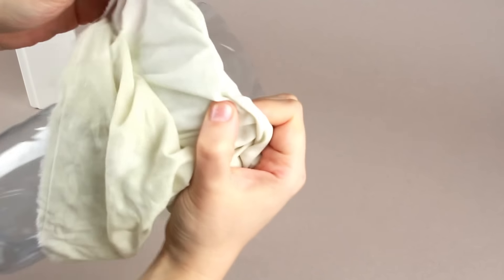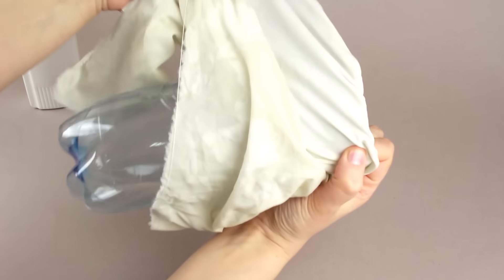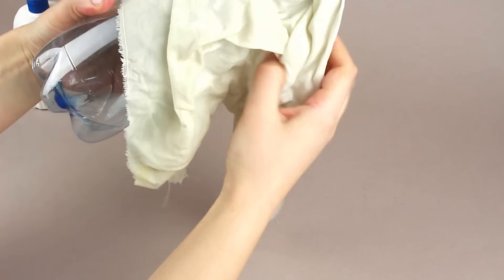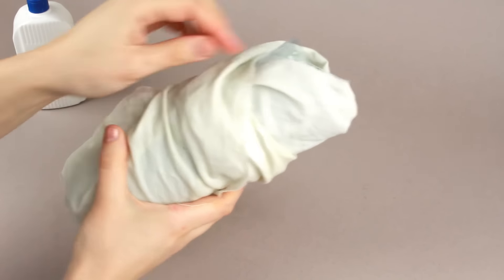Wrap the wet cloth around the bottle starting with the top edge. Spread it out to cover the whole surface.